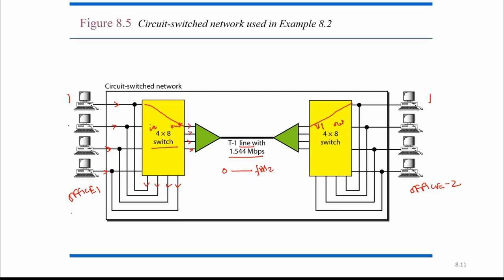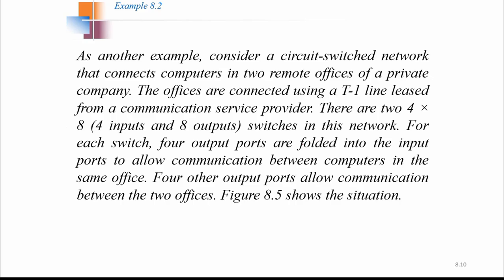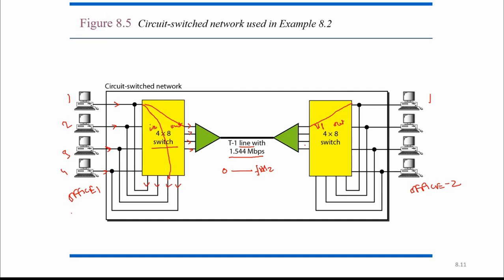If computers one, two, three, four of office one want to communicate with each other, there is a reverse back connection — four outputs are connected back. So if one wants to connect with three, the switch connects one to three. This connection is decided by the switch itself. This is the basic idea about circuit switching networks.